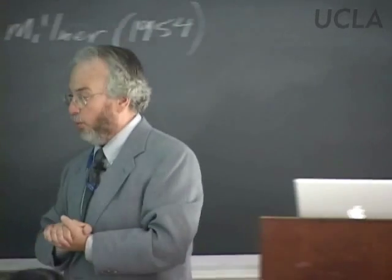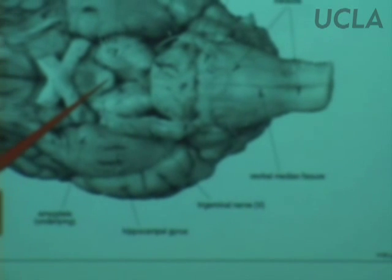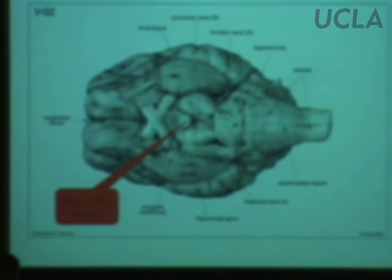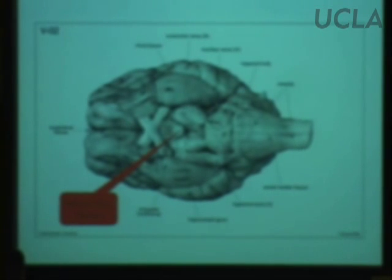The hippocampus also projects to the mammillary bodies. The fornix goes all the way down — some axons bypass the septal nuclei and go all the way to the mammillary bodies where they synapse. Here is a view of the mammillary bodies on the ventral aspect of the brain. We talked about a syndrome in humans where these deteriorate — Korsakoff's syndrome.